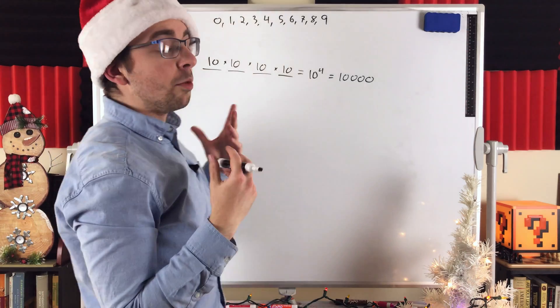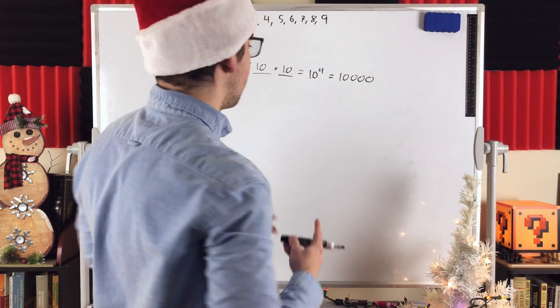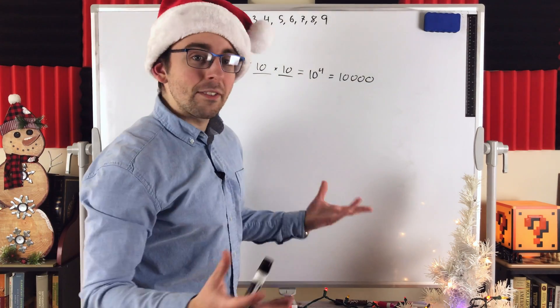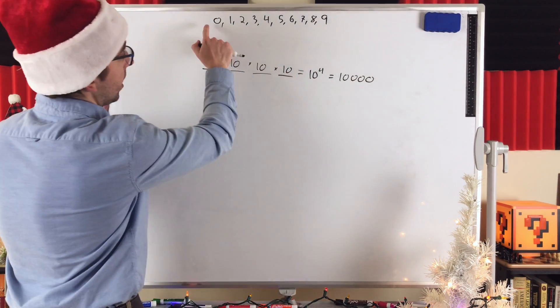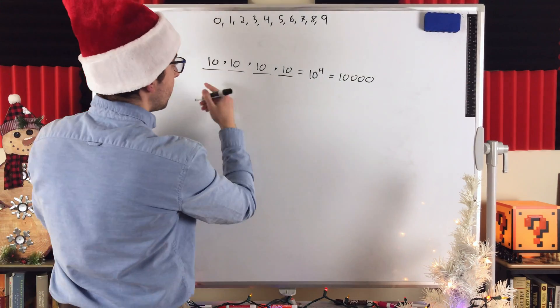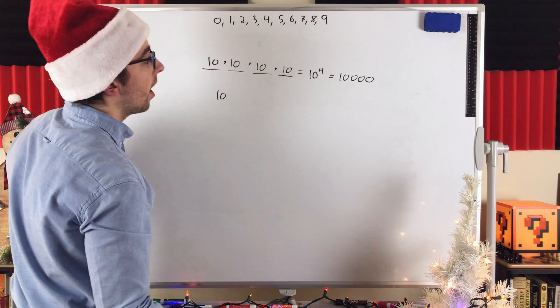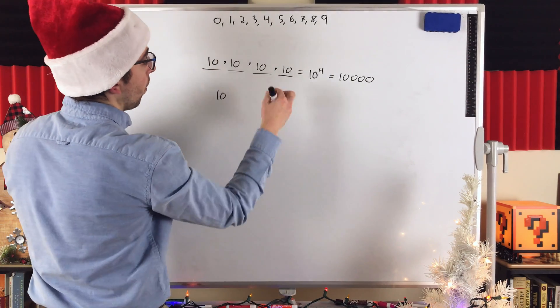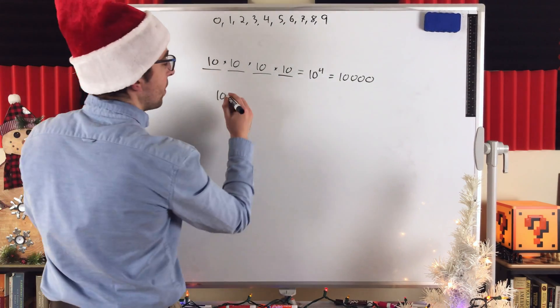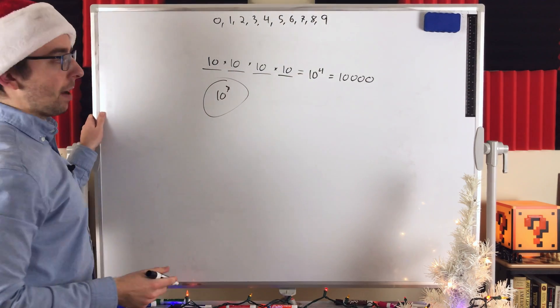You can use very similar reasoning to solve very similar problems. For example, what's the number of 7-digit codes using the digits 0 through 9 and allowing repetition? Well, it's going to be the same thing, 10 times 10 times 10 times 10, but 7 times. Because there's going to be 7 total numbers in our code, because we're talking about a 7-number code right now. So, the total number of possibilities would be 10 to the power of 7.